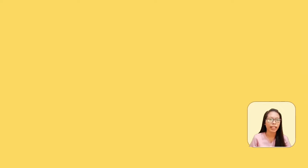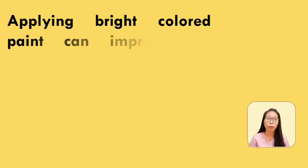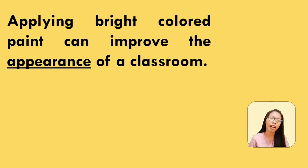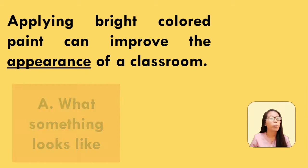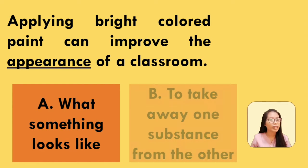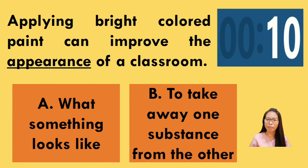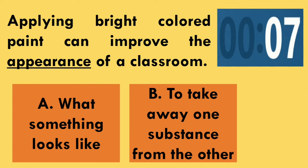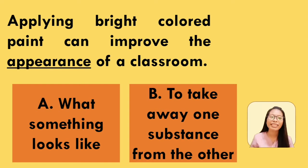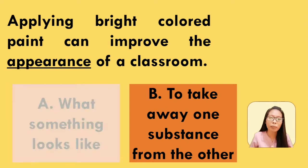The third one is: applying bright colored paint can improve the appearance of a classroom. The underlined word is appearance. Based on the sentence, what does the word appearance mean? Is it what something looks like, or to take away one substance from the other? That's right, it's letter A — it is what something looks like.